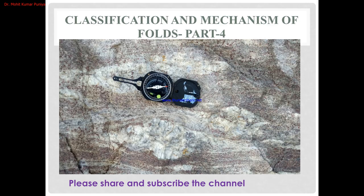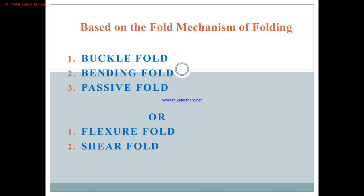Welcome friends. Today we will discuss the mechanism of folds. Based on the fold mechanism, we can divide the process into three categories: buckle fold, bending fold, and passive fold. This classification is available in older books — the Ramsay 1967 classification and S.K. Ghosh's book. In recent literature, the mechanism of folds is described as flexural fold and shear fold.